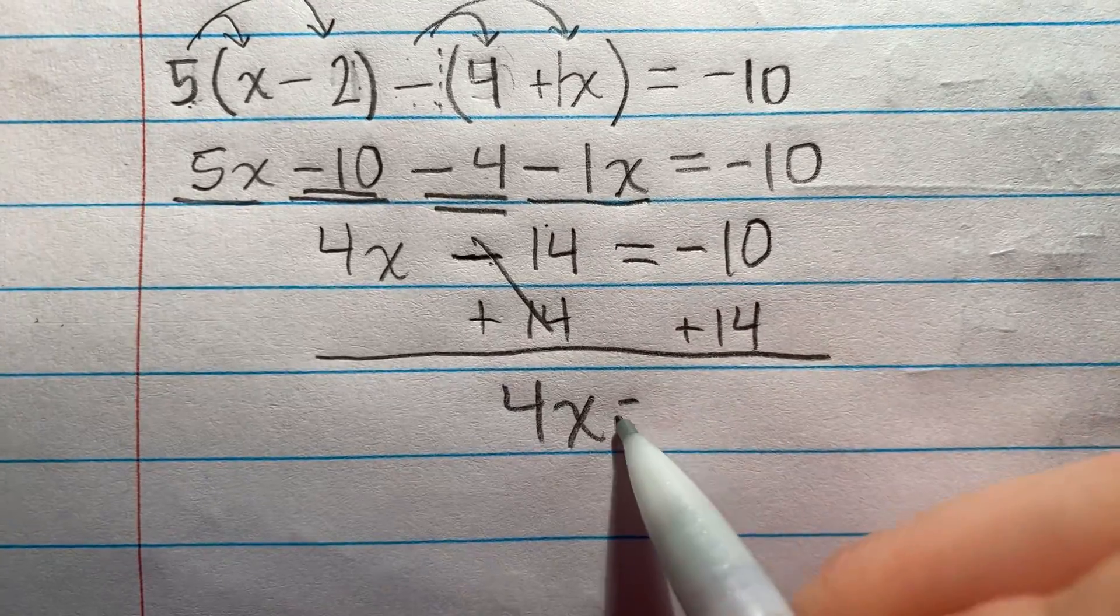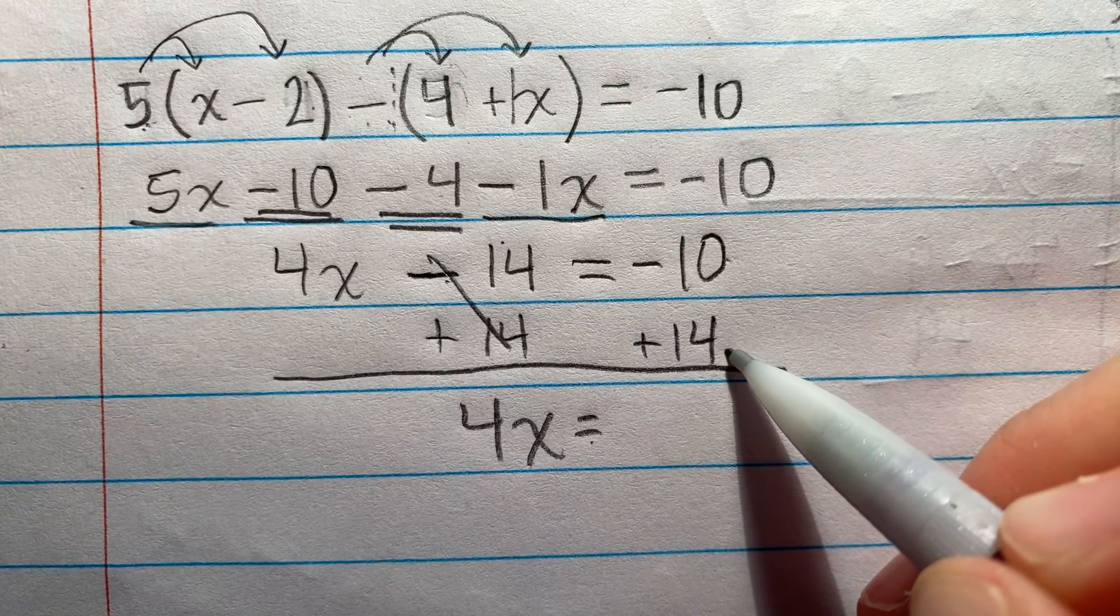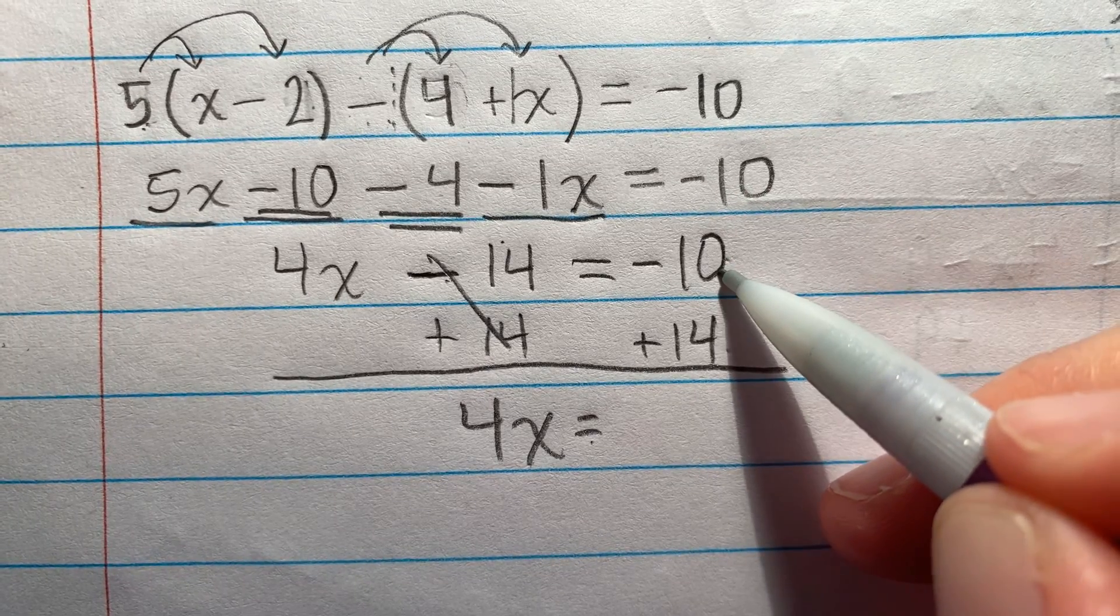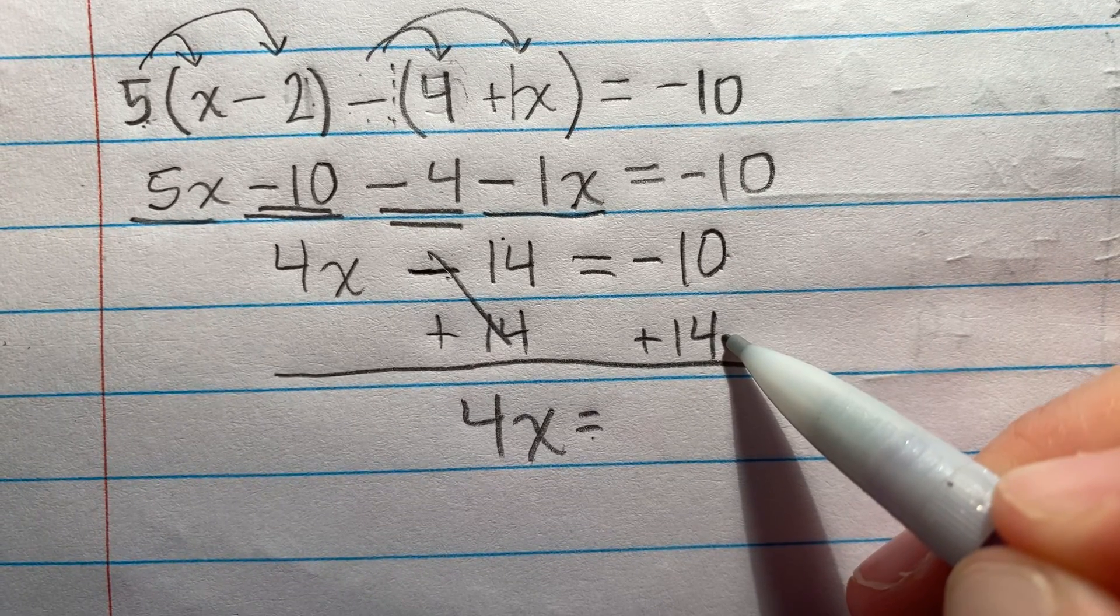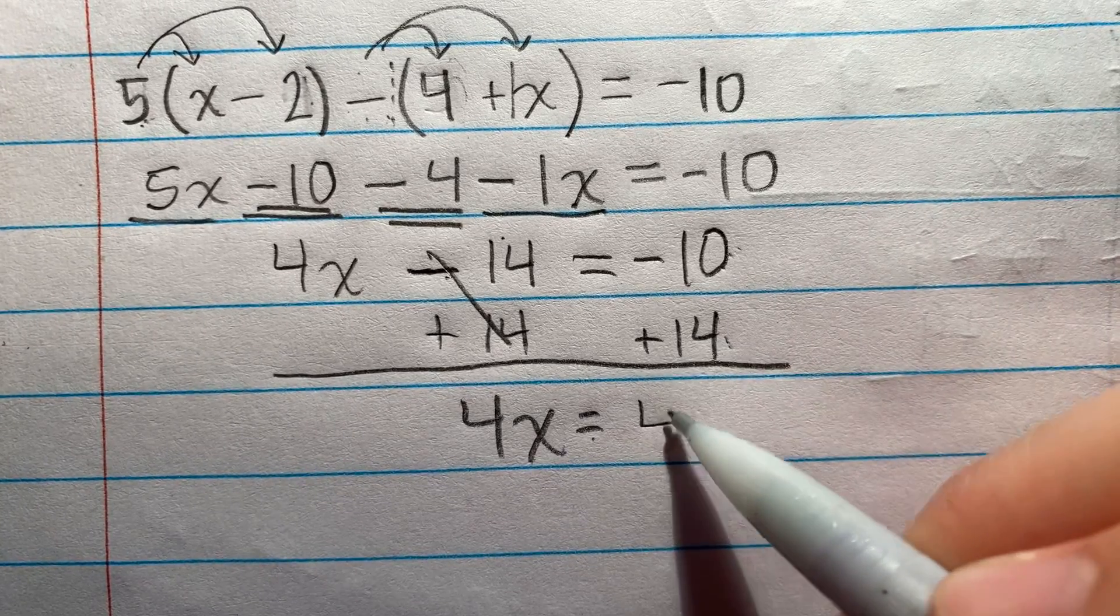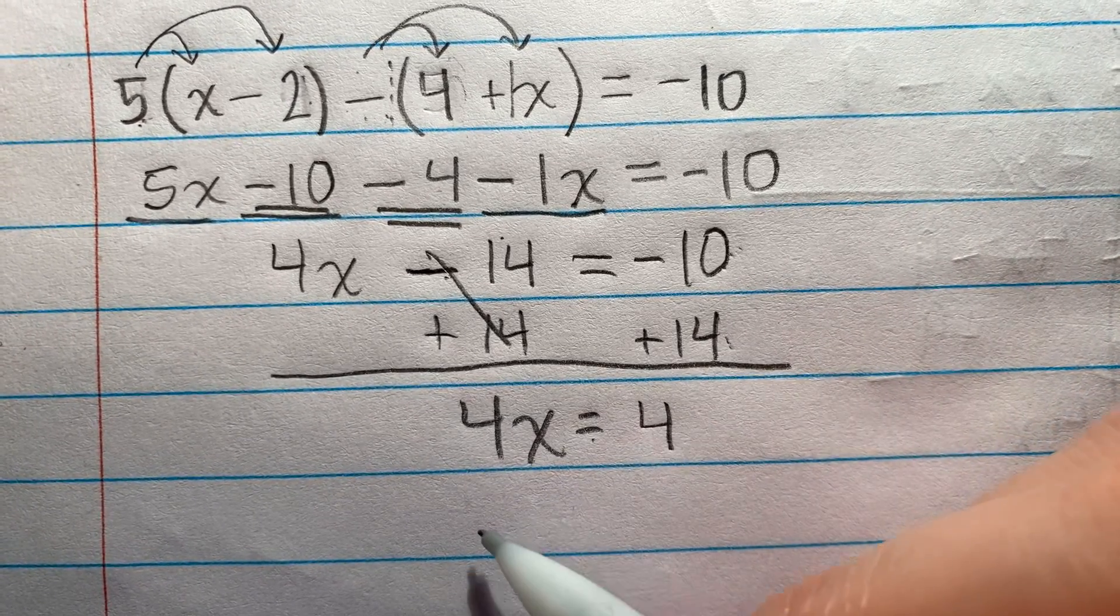4x equals. Okay, now here this is negative 10 plus 14. I have 10 holes in my boat, but I brought 14 patches with me. So I'm going to take those 10 holes, patch them up, and I'm still going to have 4 patches, positive 4, left over.